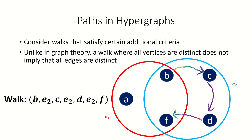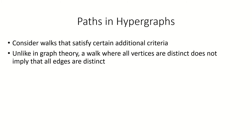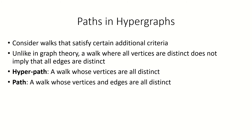So in hypergraph theory, we define two notions of a path. A hyperpath, which is the weaker notion that restricts all vertices to be distinct but allows for repeated edges. And a path, which restricts all vertices and edges in the walk to be distinct. All paths are hyperpaths, but not all hyperpaths are paths.